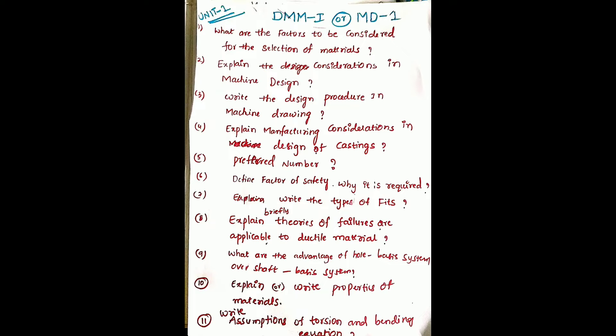These are all important theory questions. First question: what are the factors to be considered for the selection of material? Second question: explain the considerations in machine design. Third question: write the design procedure in machine design. Fourth question: explain manufacturing concentrations in the design of casting. Fifth one: preferred numbers. Sixth one: define factor of safety and why it is required.